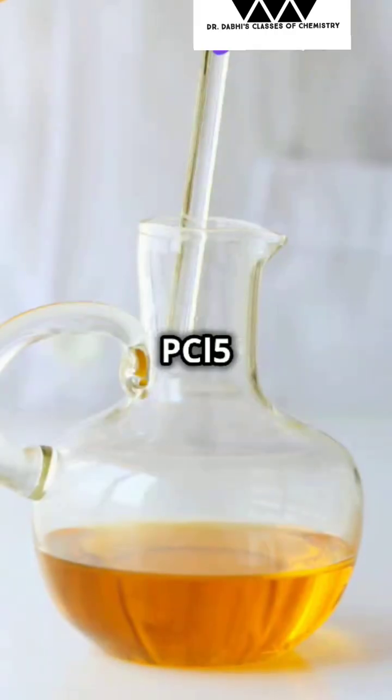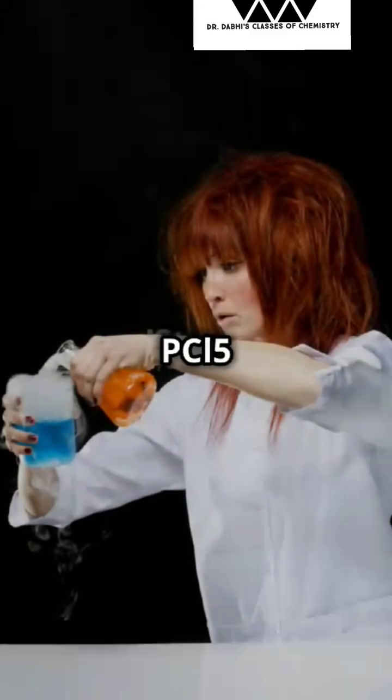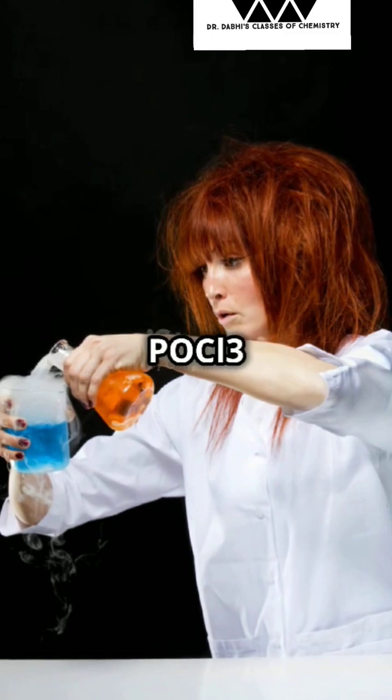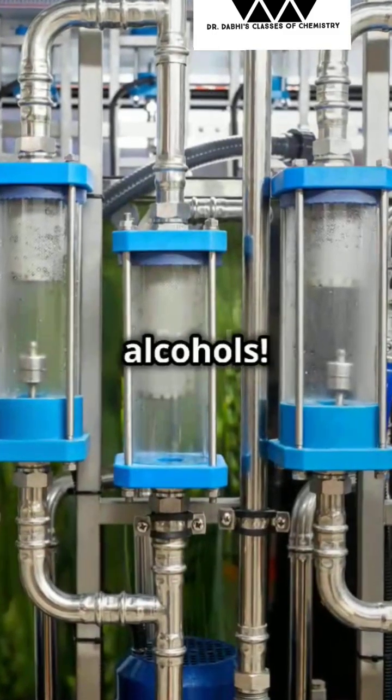Finally, phosphorus halides like PCl5 can also do the trick. ROH plus PCl5 yields RCl plus POCl3 plus HCl. And that's how you make haloalkanes from alcohol.